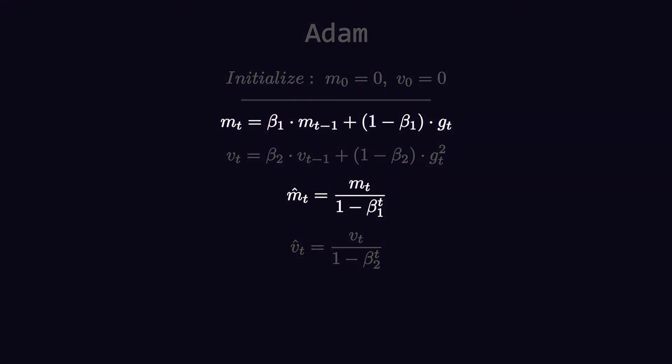In the first equation, we are dividing mt with 1 minus beta_1 raised to t. Here t is time step, meaning at which number of iteration we are at. By doing this, we will get bias-corrected mt, now known as mt_hat. Same with the second equation—just instead of mt here it is vt, and in the denominator instead of beta_1 it is beta_2.